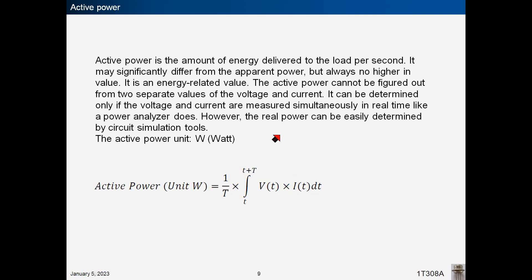Active power is the amount of energy delivered to the load per second. It may significantly differ from the apparent power, but always no higher in value. It is an energy-related value. The active power cannot be figured out from two separate values of the voltage and current. It can be determined only if the voltage and current are measured simultaneously in real time like a power analyzer does. However, the real power can be easily determined by circuit simulation tools. The unit for active power is watt and the definition is shown below.